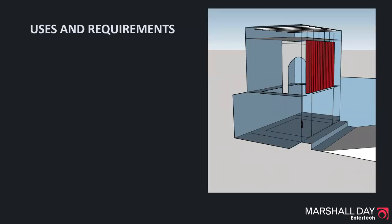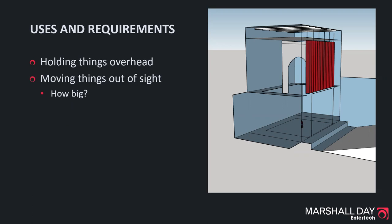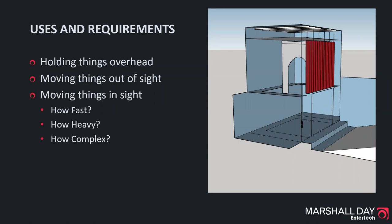Generally a fly tower is used to hold things above the stage and to move things in and out of sight. But it's not always necessary to do both, and each can be done in different ways. A whole range of things might need to be suspended. We might be moving these things in and out of sight, and if we do, we need to think about how big they are so we can move them completely out of view. Apart from moving things in and out of sight, we may or may not need to move them around while they're in sight, which requires thinking about how fast, how heavy, and how complicated the movements need to be.